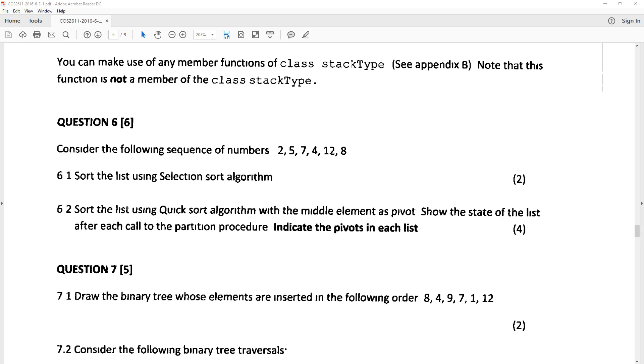It says here, consider the following sequence of numbers: 2, 5, 7, 4, 12 and 8. And it wants to sort the list using quick sort algorithm with the middle element as pivot. Show the state of the list after each call to the partition procedure. Indicate the pivots in each list.